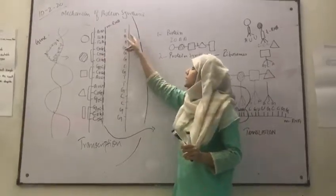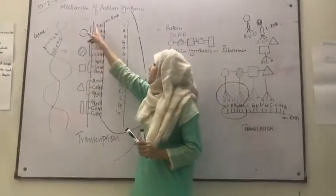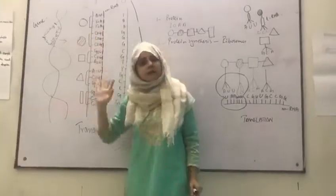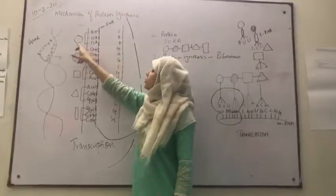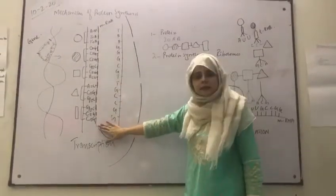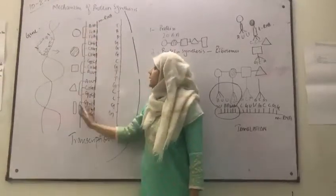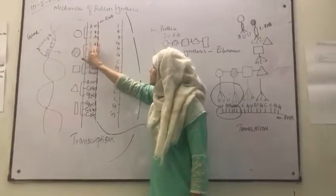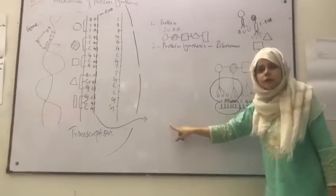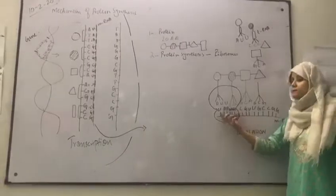The same messenger RNA gets formed by copying this strand of DNA as well. The messenger RNA gets synthesized, and then the bonding between the messenger RNA strand and the DNA strand will break open. The messenger RNA will move out of the nucleus and settle itself in the smaller unit of the ribosome, exposing its first six base sequences.